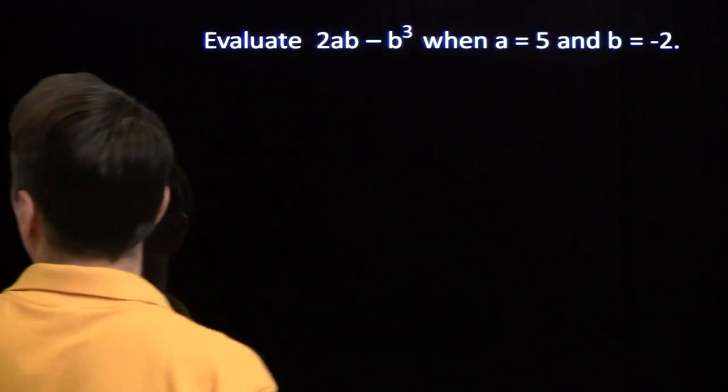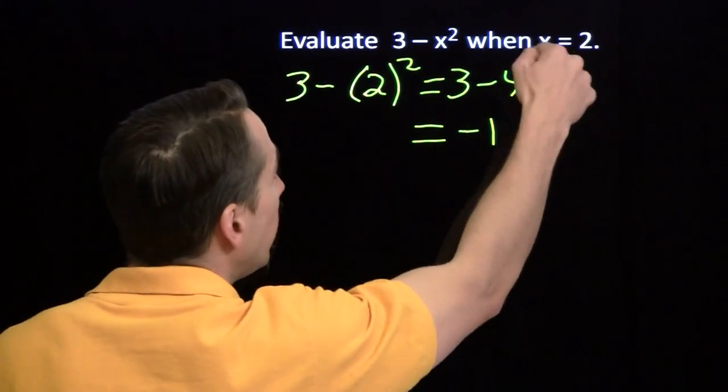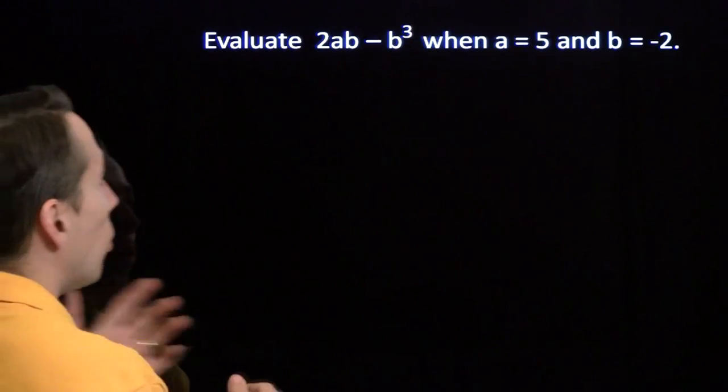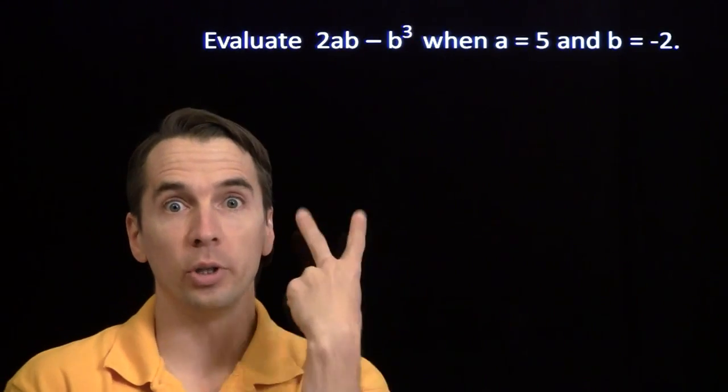We do the same thing. Back here, we took the 2 in, we put it in for x. Over here, we're going to do the same thing, except we're going to do it twice.